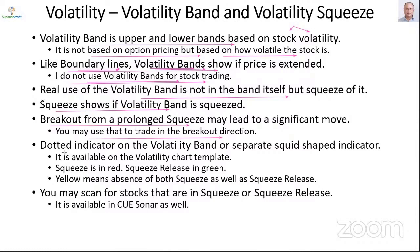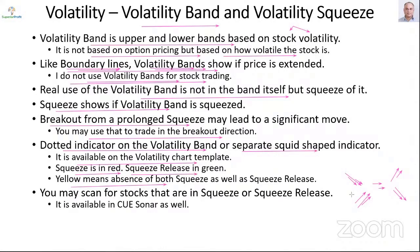The squeeze shows if the volatility band is squeezed. It is shown as a dotted indicator on the volatility band or a separate squid-shaped indicator. Squeeze is shown in red color — red dots or red squid line. Squeeze release is in green. Yellow means absence of both squeeze and squeeze release — neither contracting nor expanding. When the volatility band is contracting, it shows up as squeeze in red; when it is releasing, it shows as green; when neither expanding nor contracting, it shows as yellow.